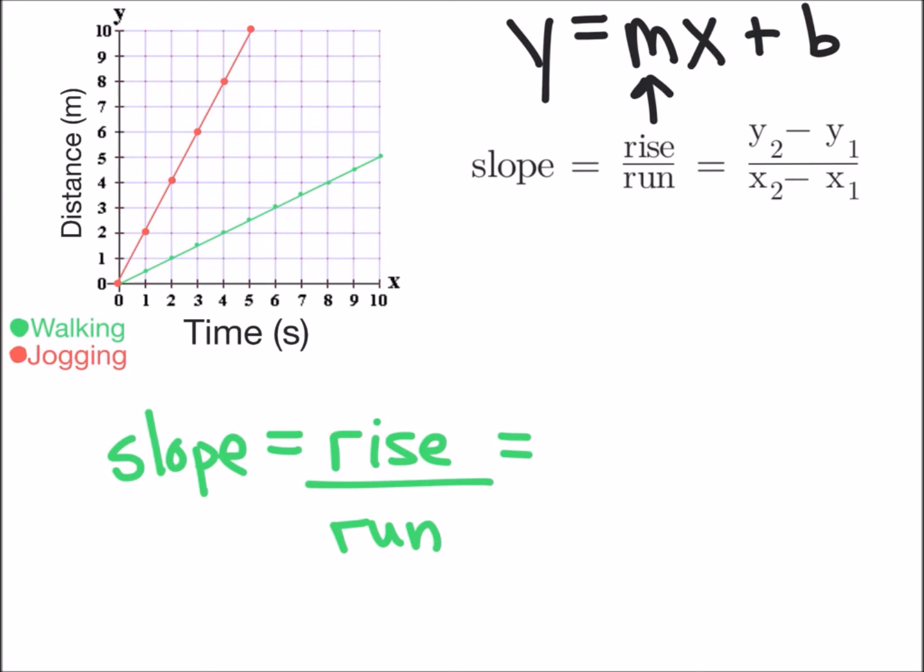The rise for the walking data is 5 meters. I'm going to substitute that in for the rise divided by the run, which is going to be 10 seconds.